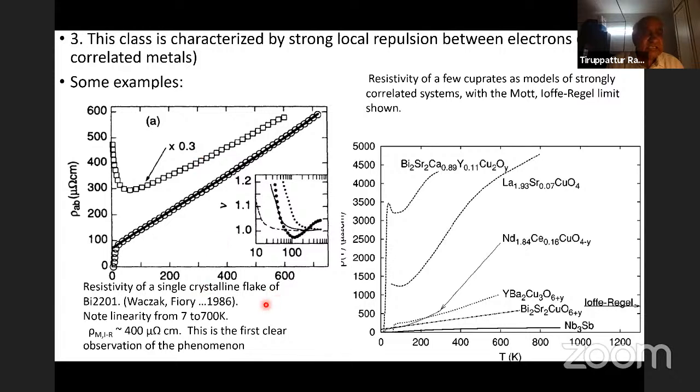Let me show some examples. This is perhaps the first clear observation of the phenomenon. This was done, I think, in 1986. The authors, Vašek, Fiori and so on, they took a single crystalline flake of bismuth 2212. This is just a physicist's shorthand for a cuprate which has bismuth in it. They found that they have plotted the resistivity as a function of temperature. They found that the resistivity increases linearly with temperature, starting from very suspiciously low temperatures, seven degrees to a fairly high temperature, like 700 degrees. Since then, many measurements have been made. For instance, here, I show a number of cuprates whose resistivity is plotted as a function of temperature. There is some nonlinearity in the beginning, but then after that, it becomes linear in temperature.